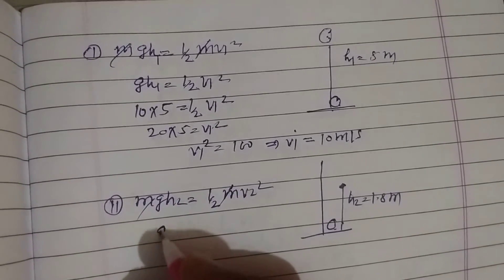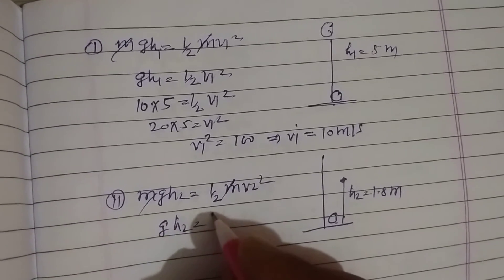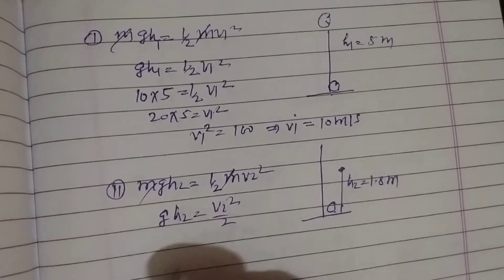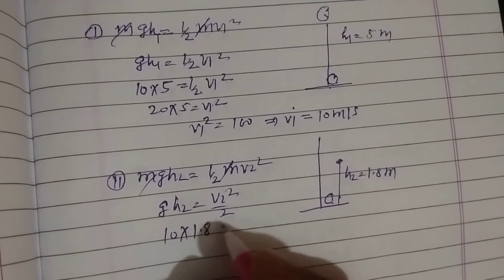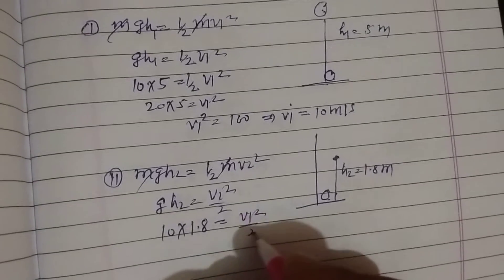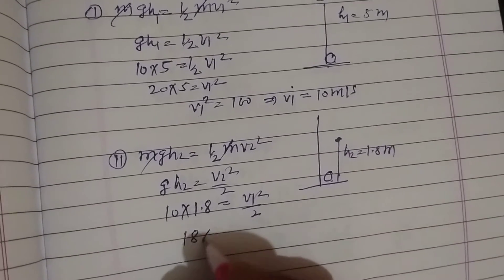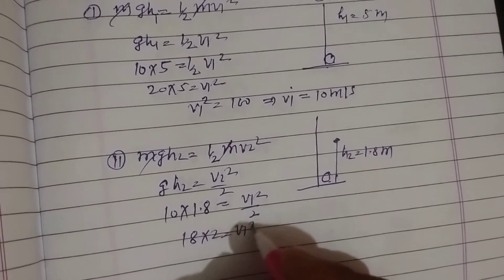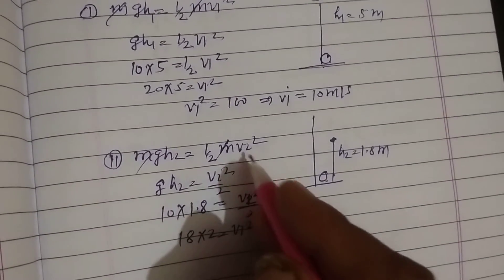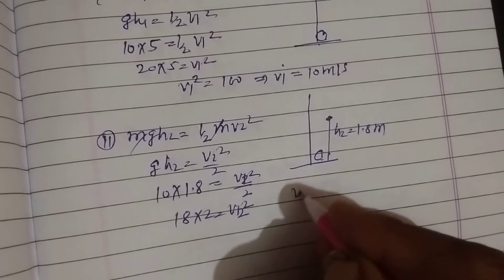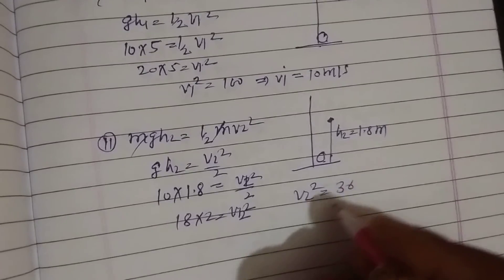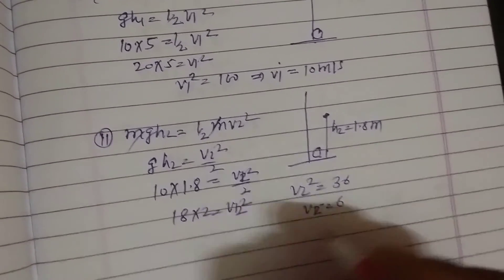Canceling m: g × h2 equals v2 squared over 2. With g equals 10 and h equals 1.8, we get 10 × 1.8 equals v2 squared over 2. This gives 18 equals v2 squared over 2, so v2 squared equals 36. Therefore v2 equals 6 meters per second.